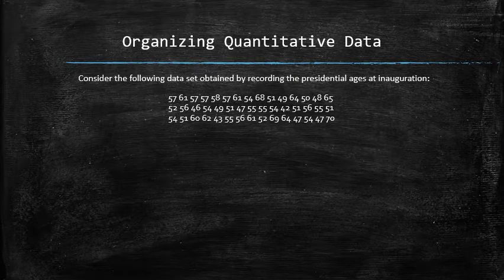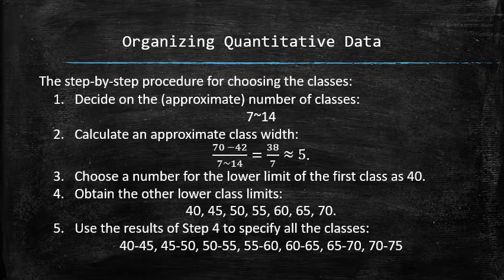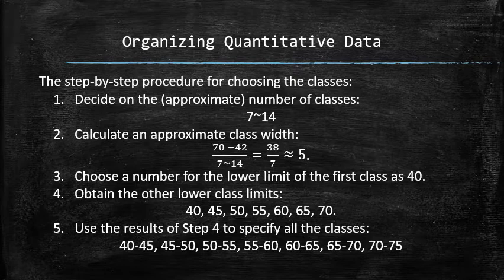Let's take another look at our data before we decide how to split it into classes. Using the step-by-step procedure for choosing the classes, we decide that the number of classes should be between 7 and 14. To calculate the approximate class width, we obtain the range by subtracting the smallest value from the largest value and dividing it by a number between 7 and 14, which approximately will give us a nice number 5 when the number of classes is chosen to be 7.